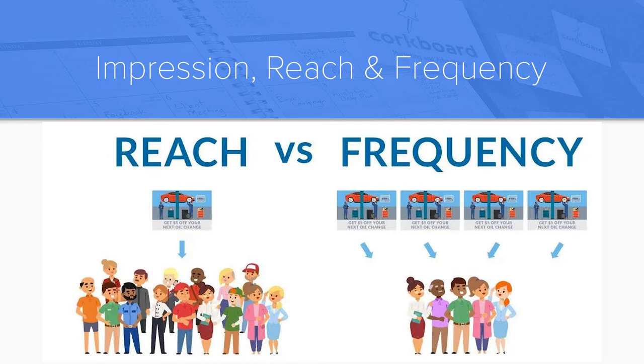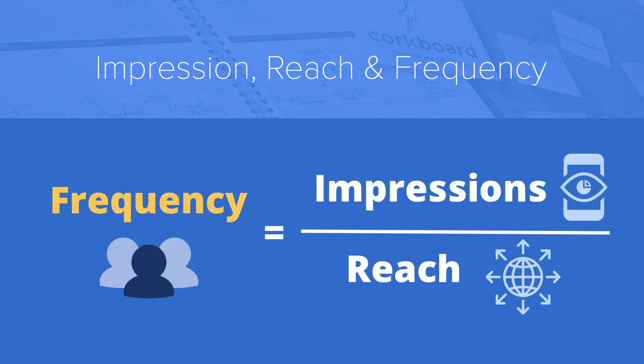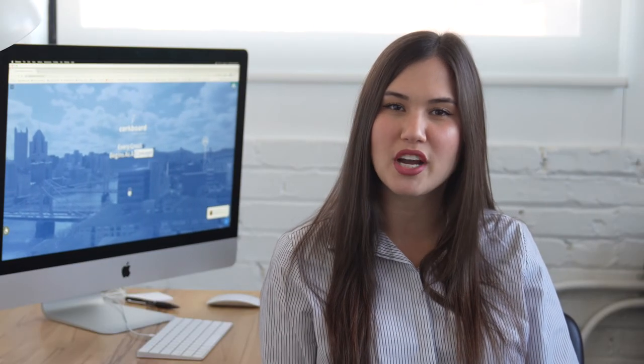To clarify, one individual counts as one person reached. But if that ad is shown to that one person three times, or has a frequency of three, that counts as three impressions. So impressions divided by reach equals frequency. If you have 30,000 impressions and you've reached 10,000 people, you will have a frequency of three, which means each person saw the ad three times.